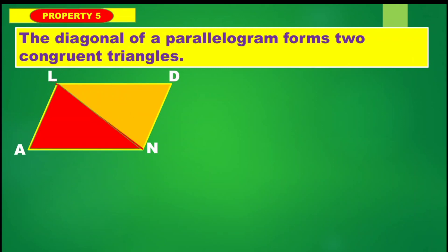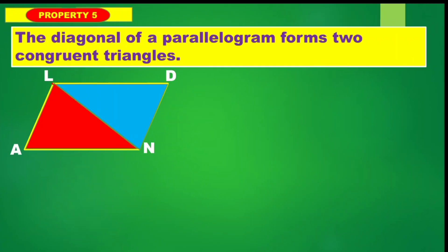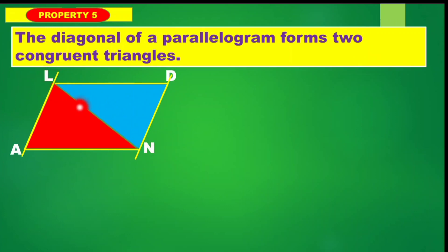We have triangle LEN and triangle NDL. If we extend side LA and side ND, we have formed a transversal line — line LN.